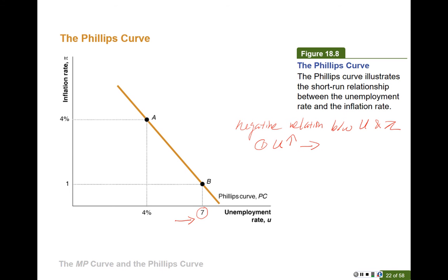From the firm's perspective, if the unemployment rate is high, they see many people looking for jobs in the market, so there could potentially be many people chasing one position. As a result, firms can easily offer a lower level of wage to hire workers. So from both the firm's and the worker's perspective, wages will go down when unemployment is high. Since wage is an important input to produce goods and services, with lower labor costs, output prices go down, and the inflation rate will be low.